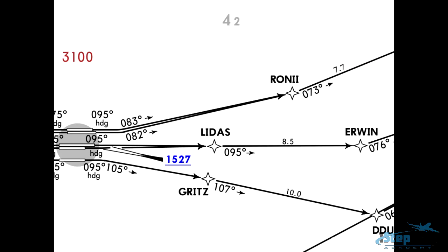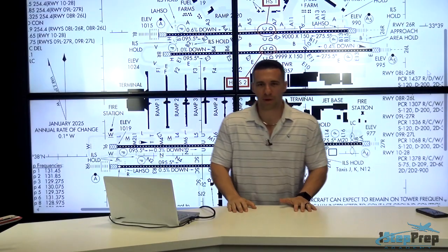RNAV to Roni, runway 8 right, clear for takeoff. What exactly is the significance of that clearance? Joe Munoz, OneStepPrep.com.